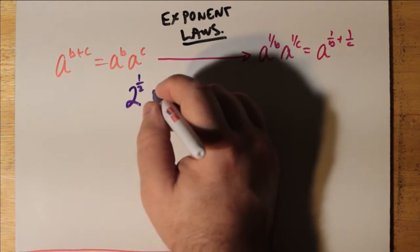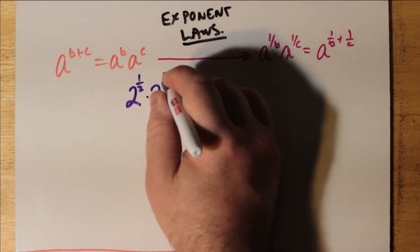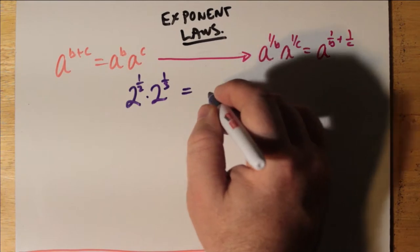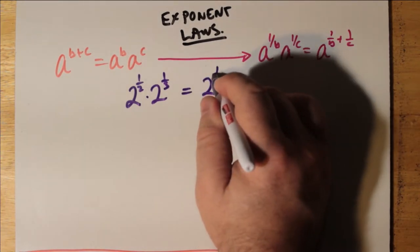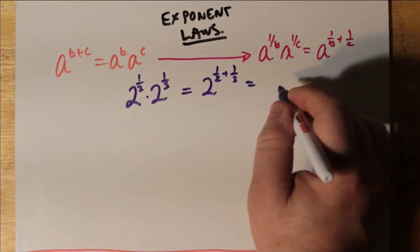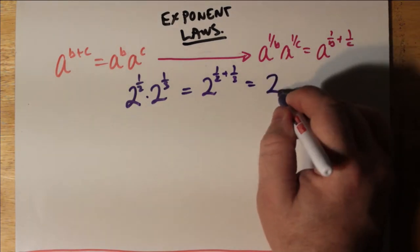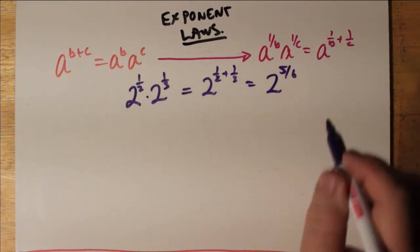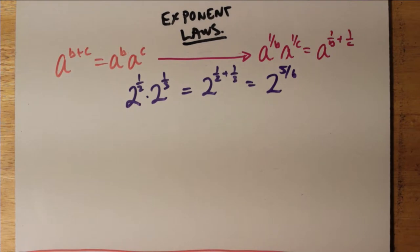So that's 2 to the 1 half, for example, times 2 to the 1 third is like 2 to the 1 half plus 1 third. So if you can add fractions, you would come up with 1 half plus 1 third is 5 over 6, or that's the 6th root of 2 to the power 5.